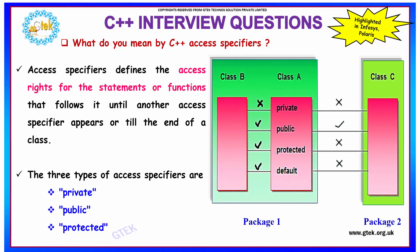What do you mean by C++ access specifiers? Access specifiers define the access rights for the statements or functions that follow it until another access specifier appears or till the end of a class. There are three types of access specifiers.